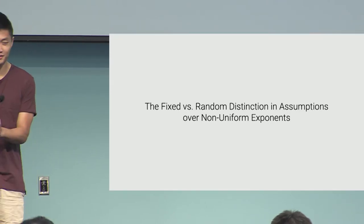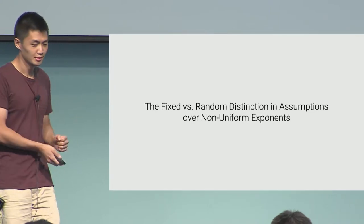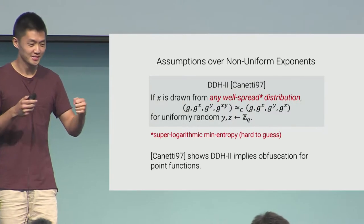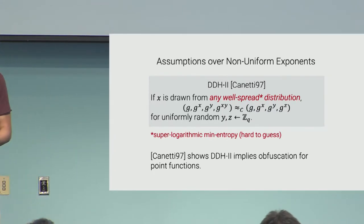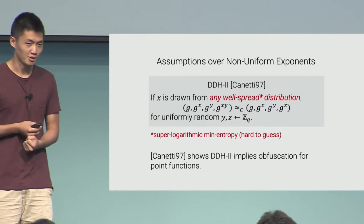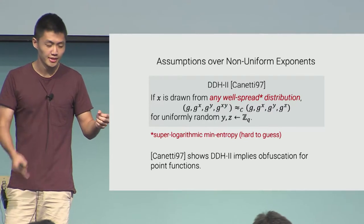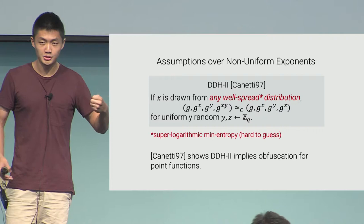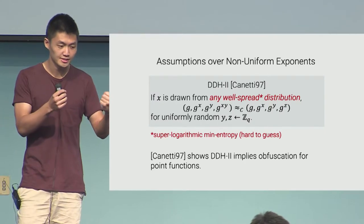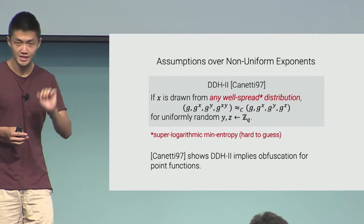For the last part of this talk, I'm going to shift gears and look at a totally different setting where the fixed-versus-random-generator distinction matters the most: assumptions over non-uniform exponents. If you think about CDH and DDH, all the secret exponents are uniformly random from Z_Q. But sometimes we encounter assumptions in crypto that don't have this property — in particular, this assumption due to Canetti called DDH2. This is exactly the same form as standard DDH, except now the exponent X can be chosen from an arbitrary well-spread distribution. Y and Z are still chosen uniformly at random, but X must satisfy the assumption as long as it's drawn from any distribution that has super-logarithmic entropy. It's a very strong assumption.